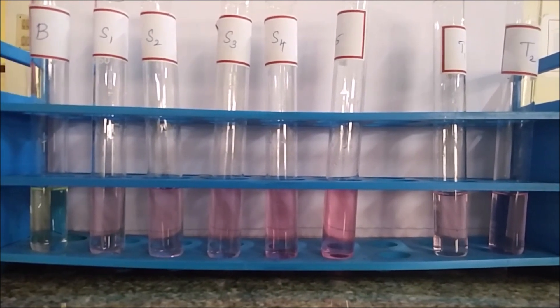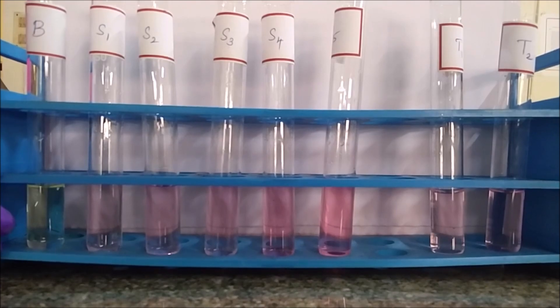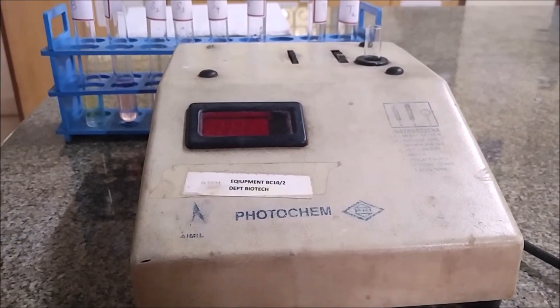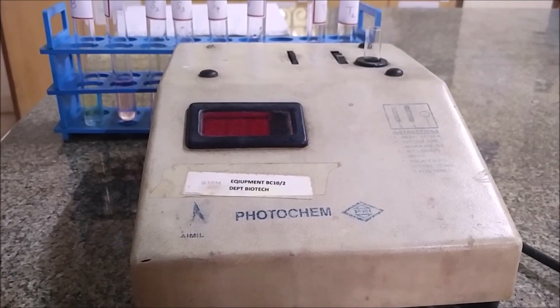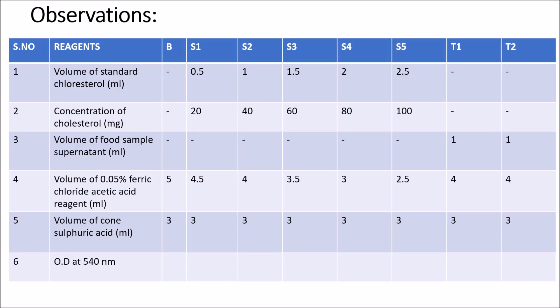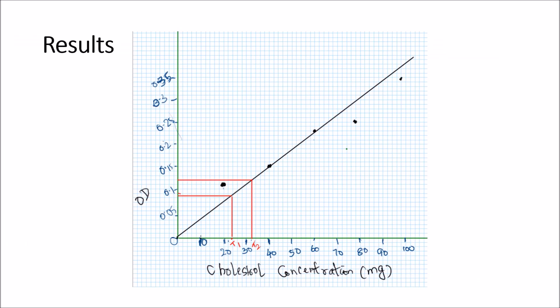After 15 minutes of incubation, a pink color complex is formed. The intensity of the color is measured at 540 nm using a colorimeter. The OD readings for each sample are taken and tabulated. A standard graph is drawn by plotting concentration of cholesterol on the x-axis and OD readings on the y-axis. From the graph, the amount of cholesterol in the given unknown sample is calculated.